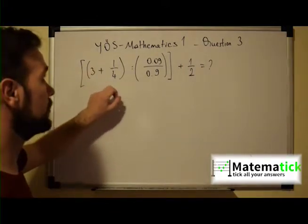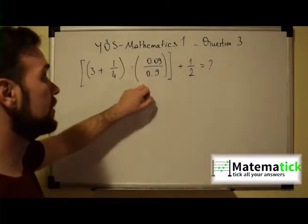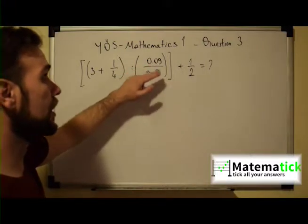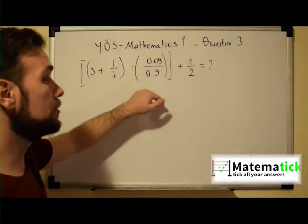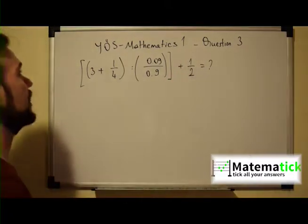We have 3 plus 1 over 4. We close the small parenthesis divided by, we open again small parenthesis, we have 0.09 over 0.9. We close the small parenthesis and the big one plus 1 over 2. Now what is this value?